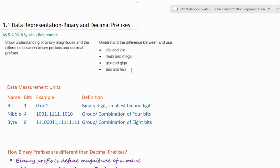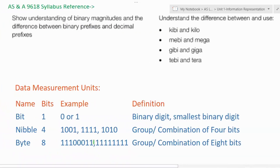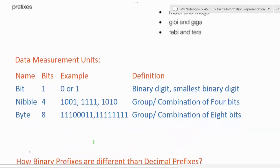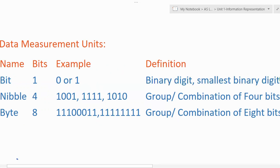Let's start without wasting any more time. Before we start with binary prefixes and decimal prefixes, you must understand the basic data measurement units. You've all heard about bit and byte, so today we'll start with a basic understanding of these. A bit, which stands for binary digit, is the smallest unit when measuring data.